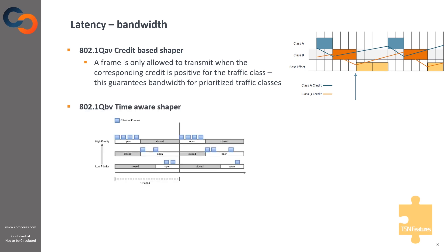The next feature to mention is the 802.1 QBV time-aware shaper. This is just as commonly used as the credit-based shaper. As the name indicates, this shaper relies on timing. It works by dividing time into repetitive periods where gates for the different traffic classes can be opened or closed, to allow priority traffic to be transmitted at a certain time. This eliminates jitter and unwanted delay through the network by allocating time slots to the traffic class of service, giving very predictable and deterministic behavior. Using a traffic analogy, a synchronized network with a time-aware shaper could guarantee a green wave through a city in rush hour for a prioritized emergency vehicle.